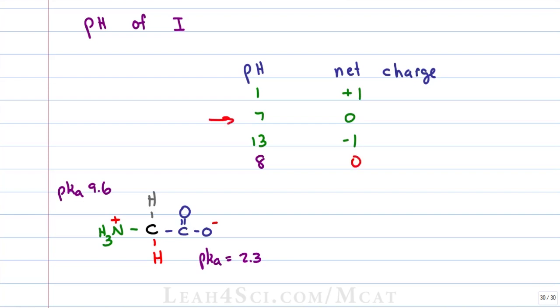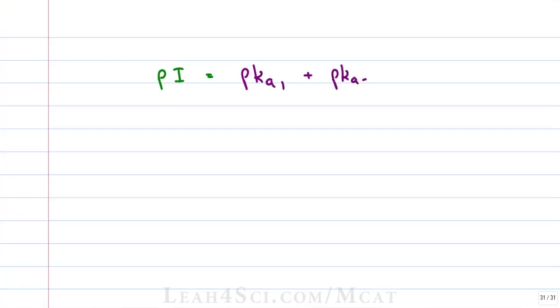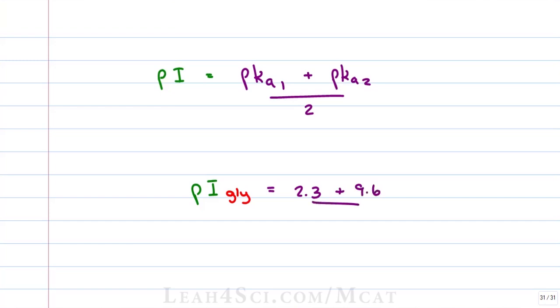So which is it — is the PI going to be a pH of seven or eight, given that both give a net charge of zero? If an amino acid does not have an ionizable side chain, meaning it only has two pKa values, one for the carboxy and one for the amine, you simply take the average: pKa1 plus pKa2 divided by two. For glycine: 2.3 plus 9.6 divided by two. On the MCAT with no calculator, round 2.3 down to 2 and 9.6 up to 10; two plus ten is twelve, divided by two gives six.